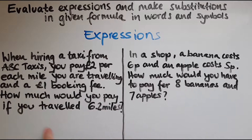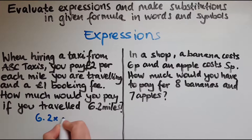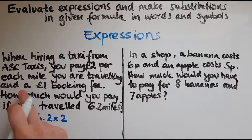The first example: when hiring a taxi from ABC Taxis you pay two pounds per each mile you're traveling and a one pound booking fee. How much would you pay if you traveled 6.2 miles? If you traveled 6.2 miles, you'd have to pay two pounds per each mile, so that is 6.2 times two, and then add a one pound booking fee on top of that.